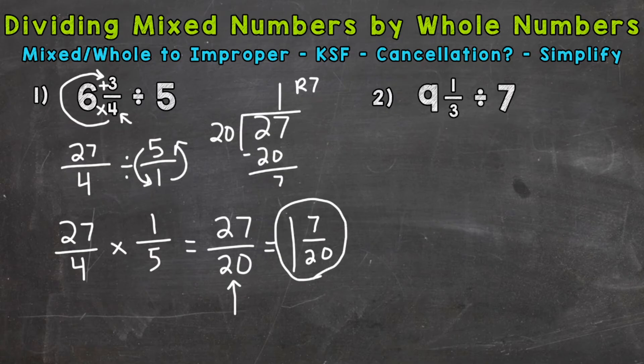So on to number 2, where we have 9 and 1 3rd divided by 7. The first thing we need to do is change any mixed numbers or whole numbers to improper fractions. So we'll start with the mixed number here. Start at the bottom and work your way to the top. Multiply and then add. So 3 times 9 is 27. Plus 1 is 28.